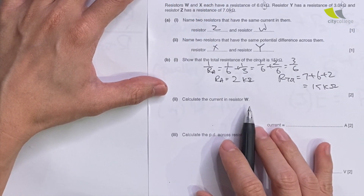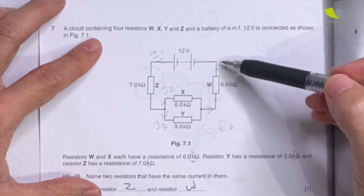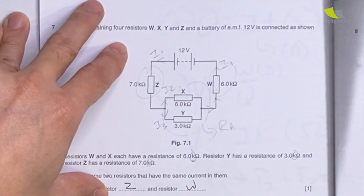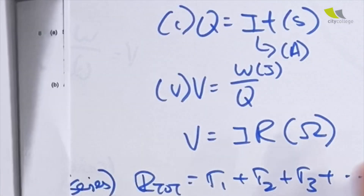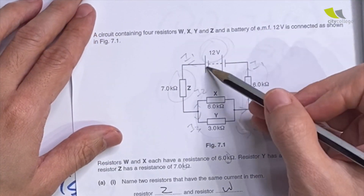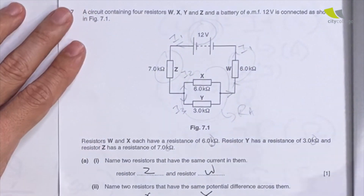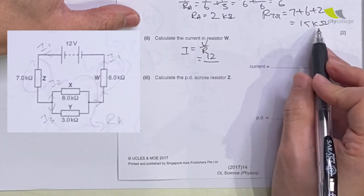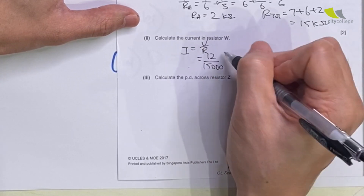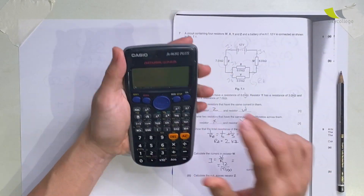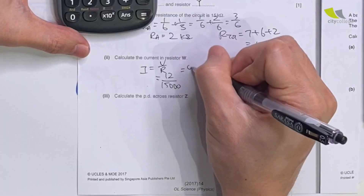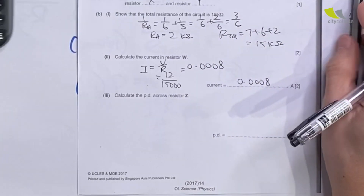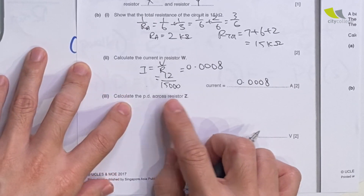To calculate the current in resistor W: the current that flows through W is the main circuit current, so use V = IR with the total EMF and total resistance. I = V/R = 12 / 15,000 = 0.0008 amperes. To calculate the PD across resistor Z: we know the resistance and that the current through Z equals the current through W, so V = IR = 0.0008 × 7,000 = 5.6 volts.